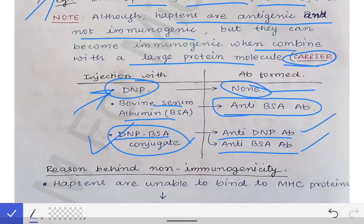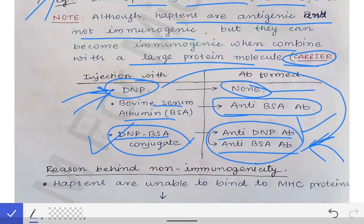So if a subject has both antibodies and we inject only the hapten DNP, then DNP will be able to bind to the anti-DNP antibody. But this anti-DNP antibody was not produced by DNP alone — it was produced by the conjugate of DNP plus BSA. This is the whole concept of the hapten.